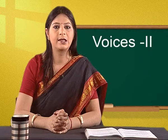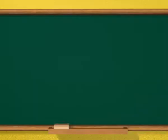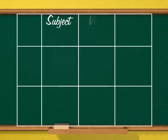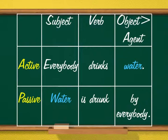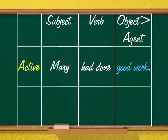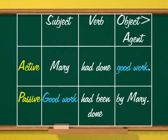Let us look at the table of active and passive voice sentences. First: active 'Everybody drinks water' — everybody is subject, drinks is verb, water is object. Passive: 'Water is drunk by everybody' — water is subject, is drunk is verb, by everybody is agent. Second: active 'Mary had done good work' — Mary is subject, had done is verb, good work is object. Passive: 'Good work had been done by Mary' — good work is subject, had been done is verb, by Mary is agent.